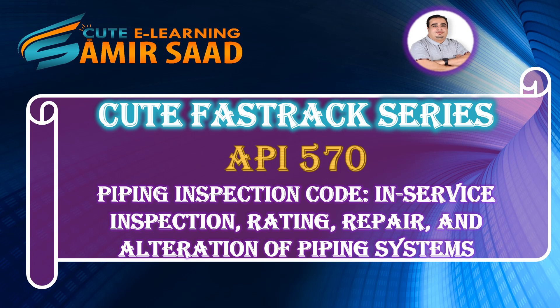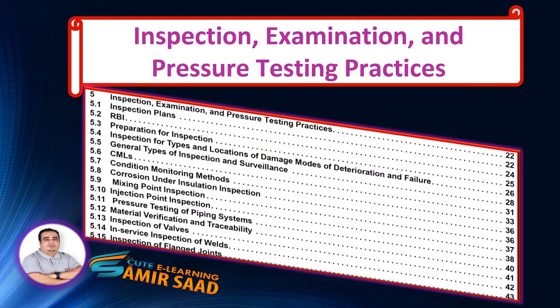Welcome to Qt Fast Track Series for API 570 Piping Inspection Code — in-service inspection, rating, repair, and alteration of piping systems. In this lecture, we will continue discussing clause 5, highlighting important information in sub-clauses 5.8, Corrosion Under Insulation Inspection, and 5.9, Mixing Point Inspection.